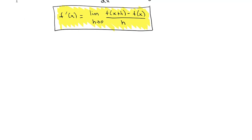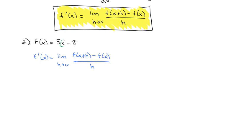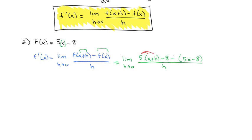Let's try a few examples where we have to calculate the derivative. Let's start with the function f of x equals 5x minus 8. To calculate the derivative, we'll use our formula: the limit as h goes to 0 of f of x plus h minus f of x, all over h. Replacing x with x plus h, we get the limit as h goes to 0 of 5 times (x plus h) minus 8, and then we subtract the entire original function in parentheses: 5x minus 8, all over h.